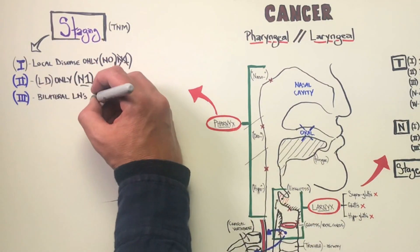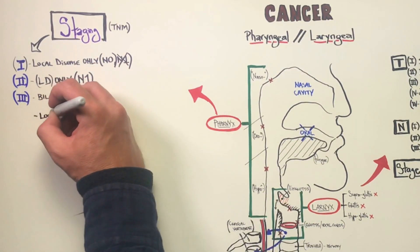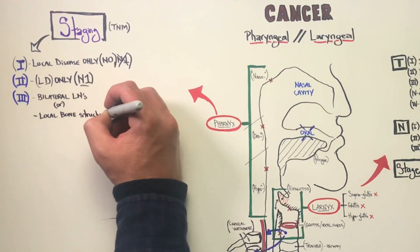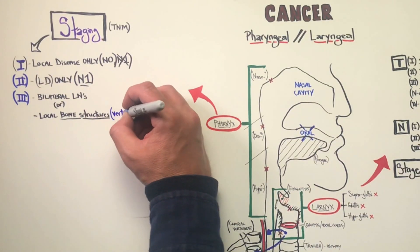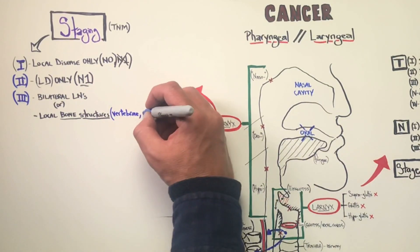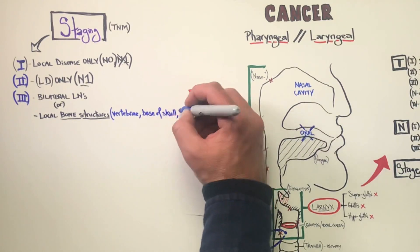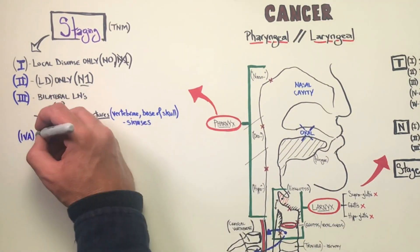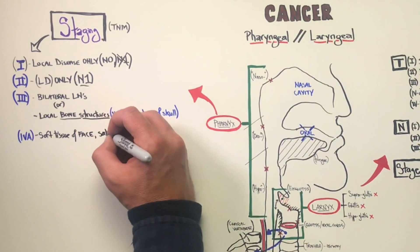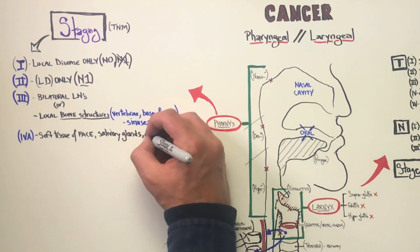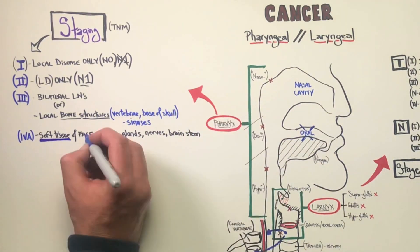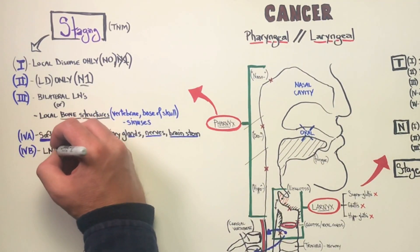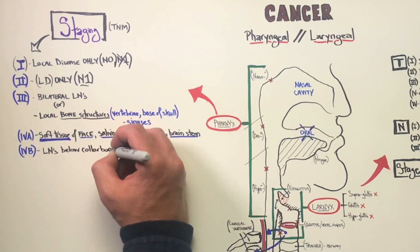When we're looking at stage 2 lymph node involvement, it's an N1, which means the lymph nodes are only on one side of the neck. Whereas in stage 3, we see either bilateral lymph nodes — on the right and the left — and local bony structures can be involved. This is because pharyngeal carcinomas are found more on the posterior of these cavities, so they're closer to the vertebrae and closer to the base of the skull.